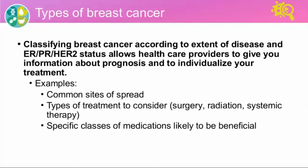Continuing with that example, we can use that kind of information to determine whether to do surgery, radiation, and/or systemic therapy — for example, with brain metastasis we often end up needing both radiation and possibly surgery. Finally, we can use the estrogen receptor, progesterone receptor, and HER2 status to determine the types of medications most likely to be beneficial — for example, we would use hormonally based treatments for hormone receptor positive breast cancer.